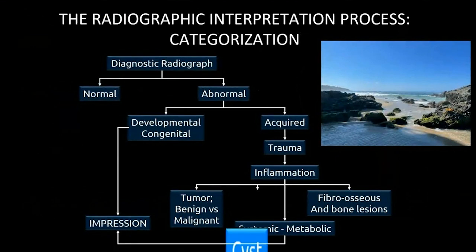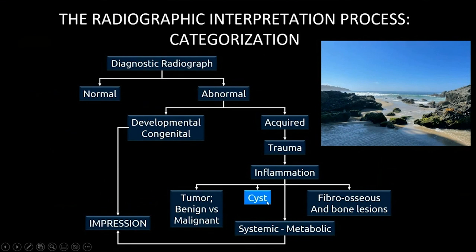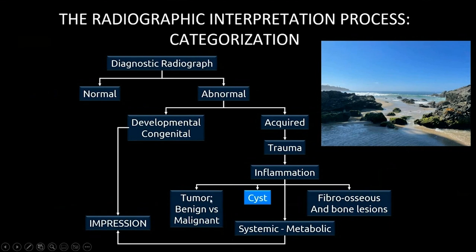We'll start with cysts. When categorizing diseases, the first thing we want to determine is normal versus abnormal. The most common things we might see are developmental or congenital, or acquired such as trauma and inflammation. As dentists, we're good at determining trauma and inflammation, but we get more hung up on cysts, fibroosseous lesions of bone, and benign versus malignant tumors — so that's really what I want to talk about today.